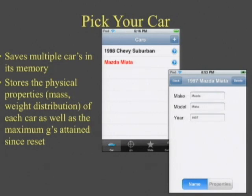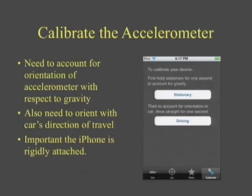First, you've got to pick your car. You can save multiple car models so you can use it in different vehicles, and it keeps track of the physical properties of each car so you can back out what forces are happening on the wheel. Once you get in your car, you have to attach it and calibrate it. Calibrating is really simple — you just do it once when you're not moving to take into account where gravity is acting, and once when you're driving straight so it knows the normal direction of travel.